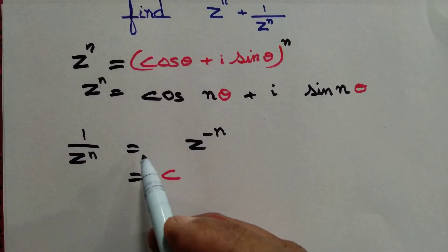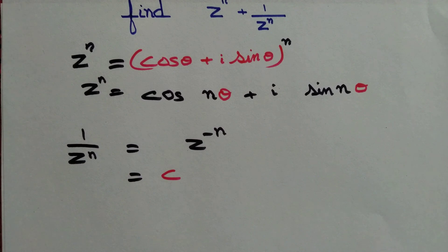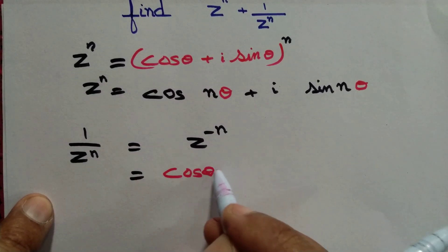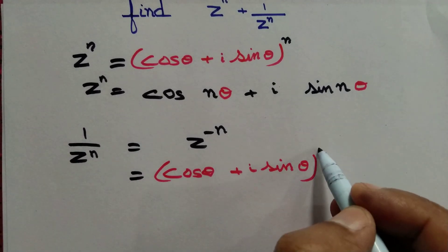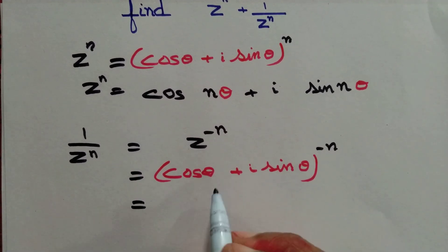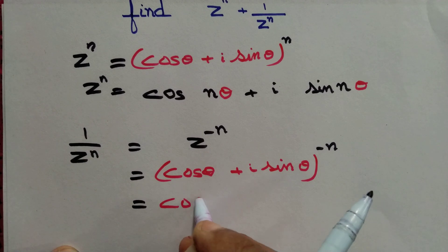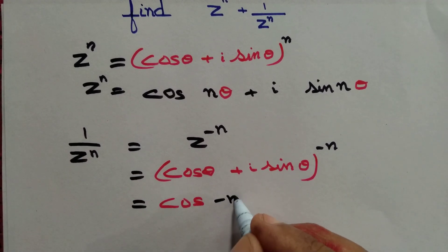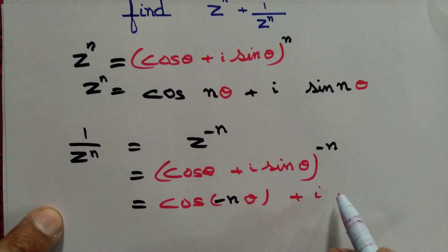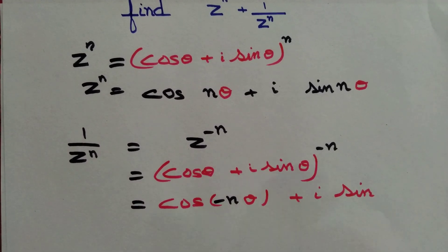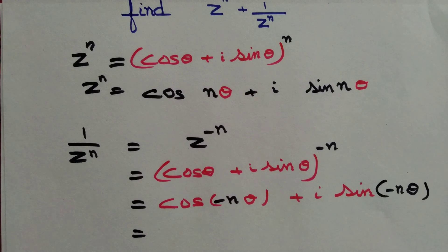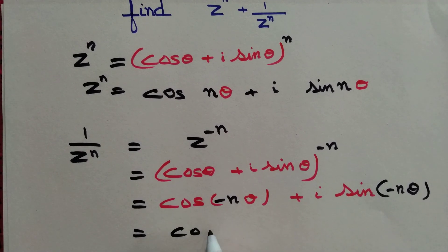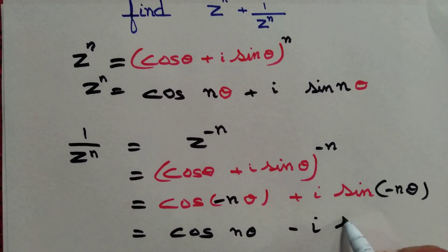Similarly, 1 by z to the power n equals z to the power minus n equals cos θ plus i sin θ to the power minus n. Again, by De Moivre's theorem, this equals cos(−nθ) plus i sin(−nθ). We know that cosine is an even function, so cos(−nθ) is simply cos(nθ). And sine is an odd function, so this becomes minus i sin(nθ).